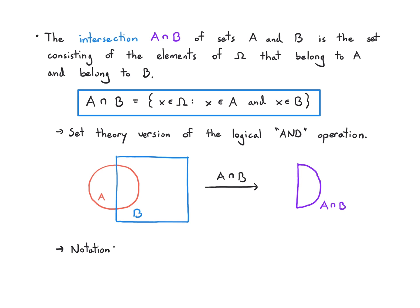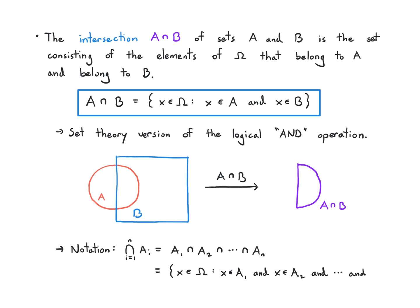In the Venn diagram, the only part included in both A and B is the overlapping purple region — that's the intersection. We also introduce notation from 1 to N for the intersection: a shorthand for taking the intersection of A1 up to An, and in set builder notation those are the elements that belong to A1 and A2 all the way up to An.